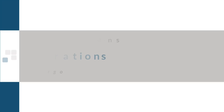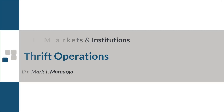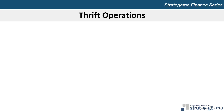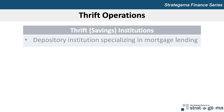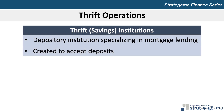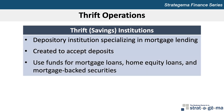This video provides an overview of the major concepts included in Chapter 21, Thrift Operations. The term thrift institution or savings institution refers to a depository institution that specializes in mortgage lending. These institutions were created to accept deposits and then use much of those funds for mortgage loans, home equity loans, and mortgage-backed securities.